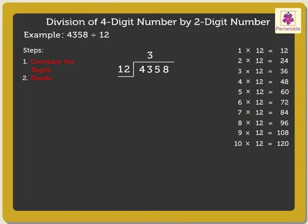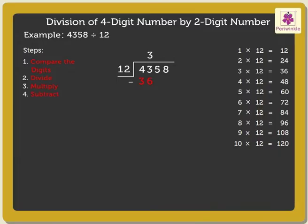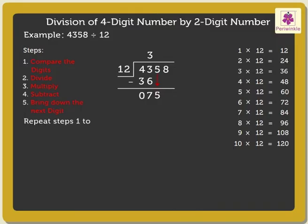We write three in the quotient above three. Step three is to multiply twelve by three. As we know, twelve into three is equal to thirty-six. We write thirty-six under forty-three. Step four is to subtract thirty-six from forty-three, which is equal to seven. Step five is to bring down the next digit, that is, five. After bringing down the digit, we repeat steps one to five till there are no more digits to bring down.